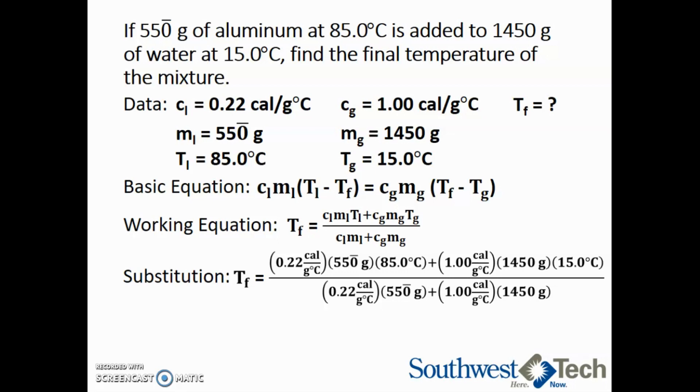In the denominator, we have 0.22 calories per gram degree Celsius times 550 grams plus 1 calorie per gram degree Celsius times 1450 grams.